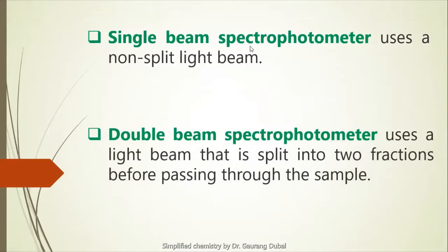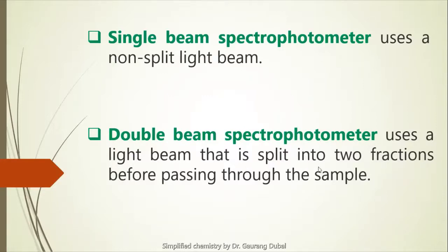The next point: a single beam spectrophotometer uses a non-split beam, meaning single beam spectrophotometer uses a non-split light, while the double beam spectrophotometer uses a light beam that is split into two fractions — so one non-split beam here, and two fractions of split light passing through the sample there.